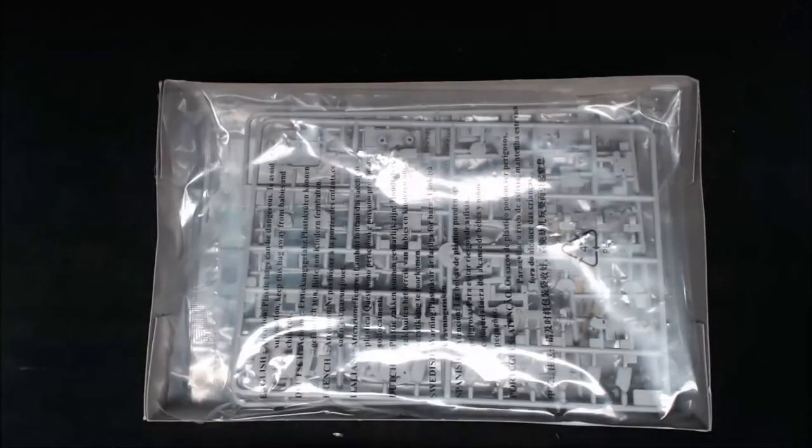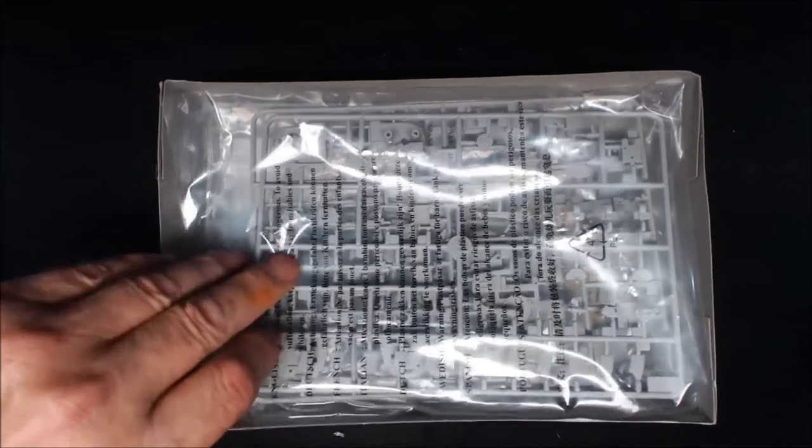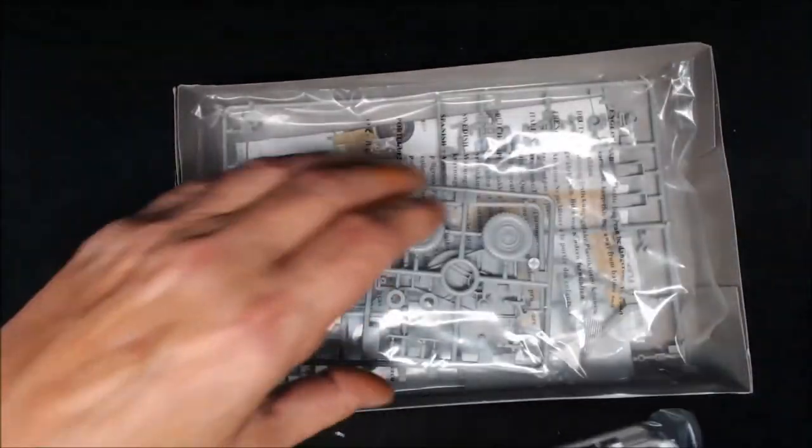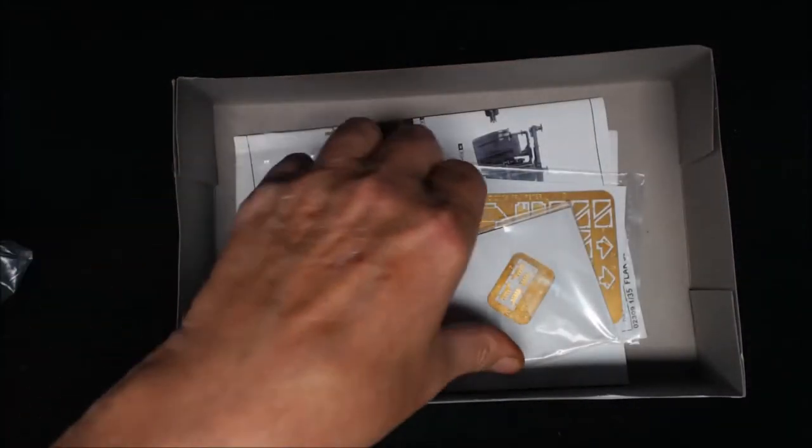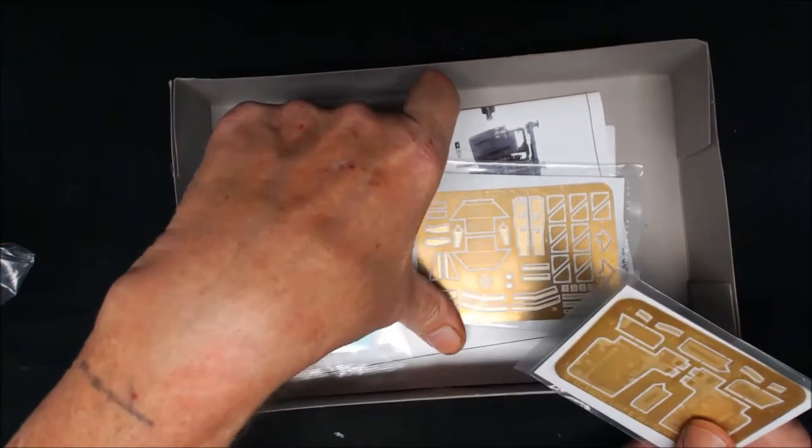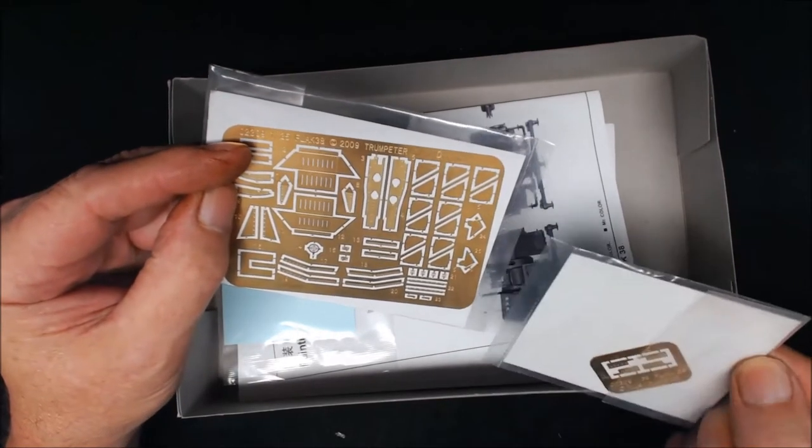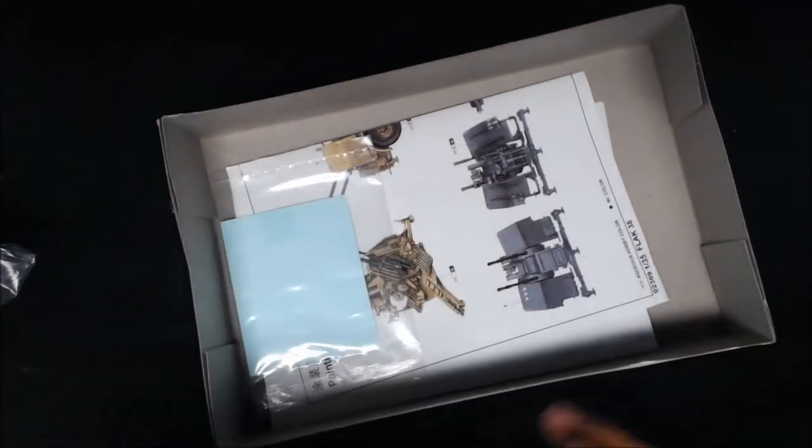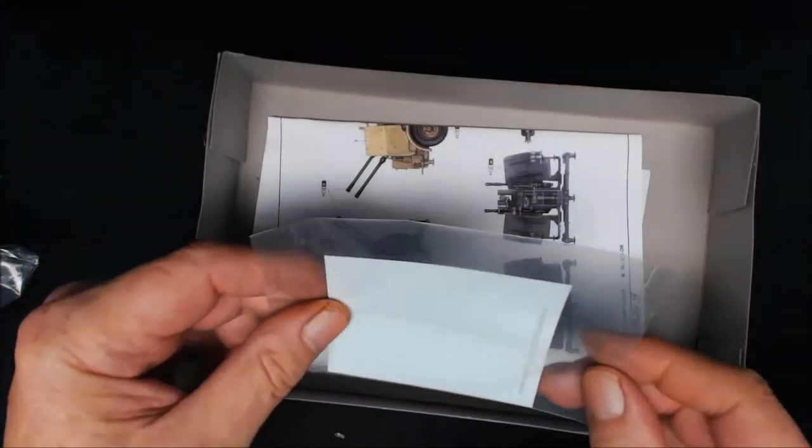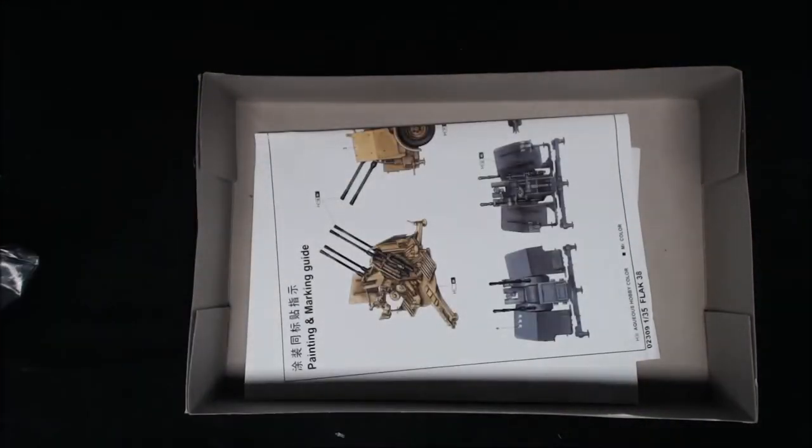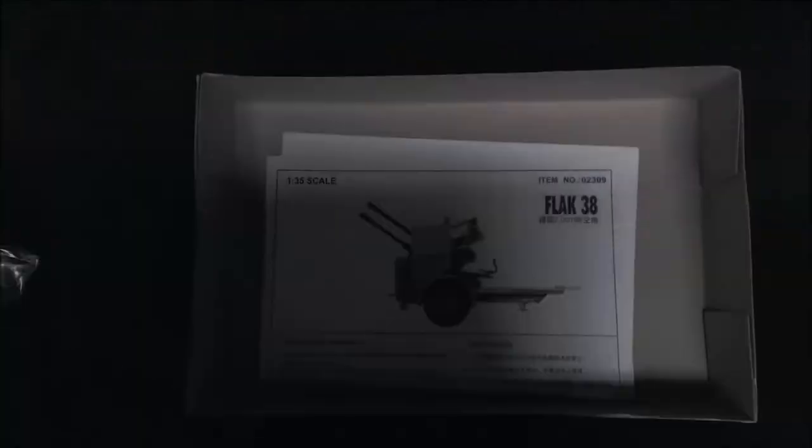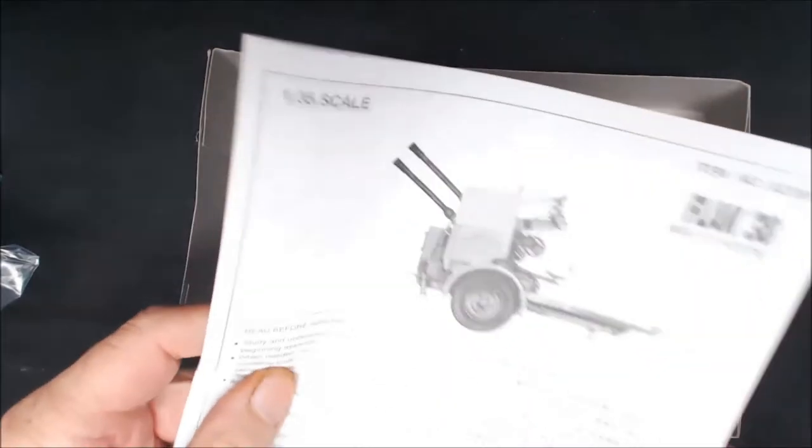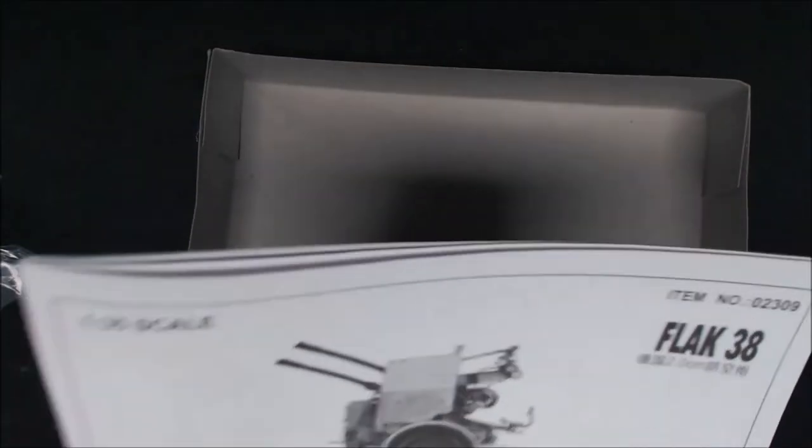We'll get into the box because there's not a great deal in this box. We get five sprues all together, but we do get PE. We get quite a bit of PE actually - one, two, three frets of PE which we'll have to take a closer look at. We also get some decals, transfers or stickers. Right in the bottom of the box we get a little workshop manual.